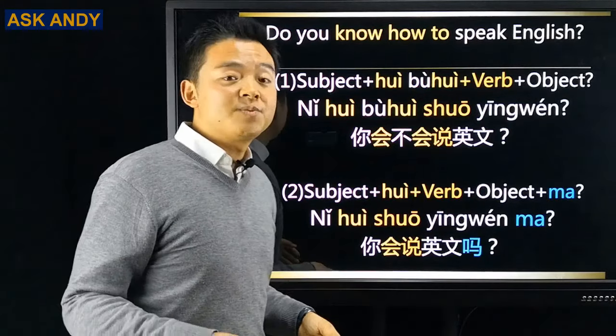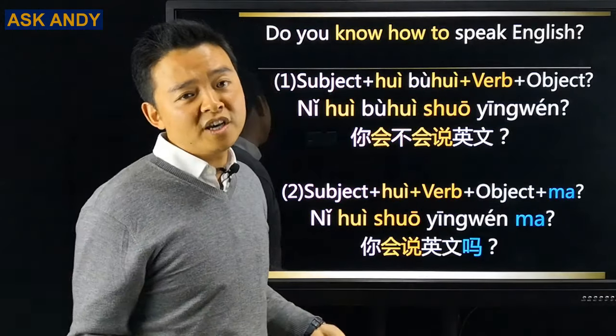Do you know how to speak English? In Chinese, what we say is 'do you know how to speak English?' using the verb 会. Pattern one is subject plus 会不会 plus verb plus object, so that would be 你会不会说英文? Pattern two is subject plus 会 plus verb plus object plus 吗, that is 你会说英文吗? 会 is a monosyllabic verb, so pattern one is easier for you to get and say. So you can do pattern one: 你会不会说英文?